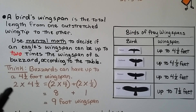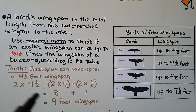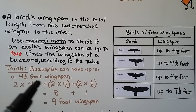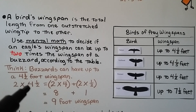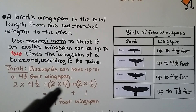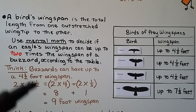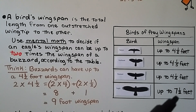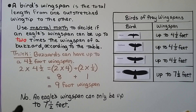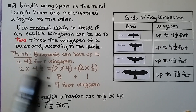We need to do 2 times 4 and 1 half. Using mental math: 2 times 4 is 8, then 2 times 1 half is 1 whole — that gives a 9-foot wingspan. We multiply the 2 to the 4 to get 8, then the 2 to the 1 half to get 1 whole. So 2 times a buzzard's wingspan would be up to 9 feet — but that's too great, since the eagle is only up to 7 and 1 half feet according to the chart. The answer is no: an eagle's wingspan can't be 2 times that of a buzzard.